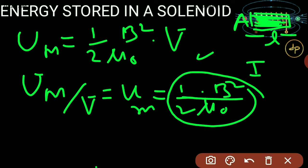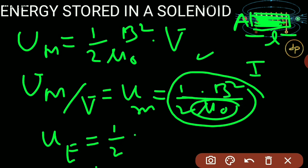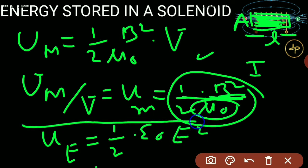We see that when current flows in a solenoid, there is magnetic potential energy in the space inside it. This is similar to a charged capacitor, where between the plates there is electric potential energy density in the form of electric flux. The electrical potential energy density has a similar expression: half times ε₀ times E², analogous to the magnetic expression.